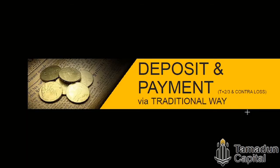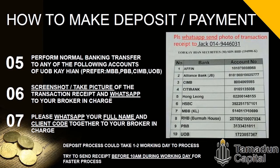There is also a traditional way to deposit and make payments — via normal banking transfer to the UOBK account. The bank account details are shown in the attached picture. Once done, screenshot the transaction receipt and WhatsApp it to your broker in charge with your full name and client code. Please note that this traditional method may take one to two working days, so try to send the receipt before 10am on working days for faster processing.